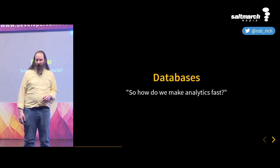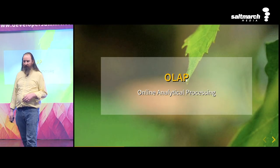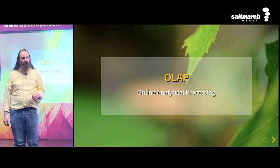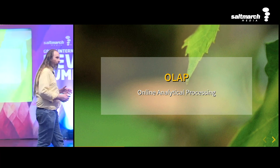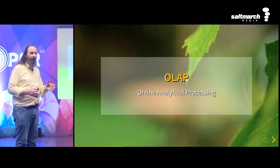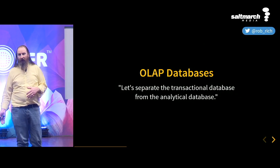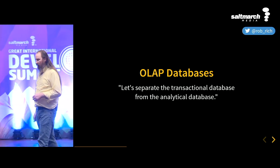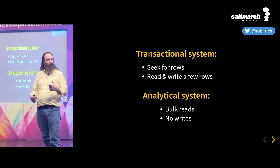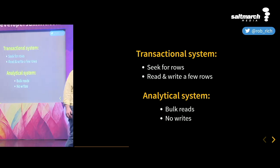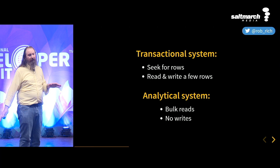So what do we do to make analytics faster? We noticed that the transactional system and the analytical system are very different, so let's separate them. We have OLTP — online transactional processing — and let's coin a new term: OLAP, online analytical processing. Let's separate our data stores into a transactional data store and an analytical data store. In our transactional system we were seeking for rows, reading one row, updating it. In our analytical system we're reading lots of rows and doing bigger, heavier calculations. Maybe it makes sense to separate these into two pieces.